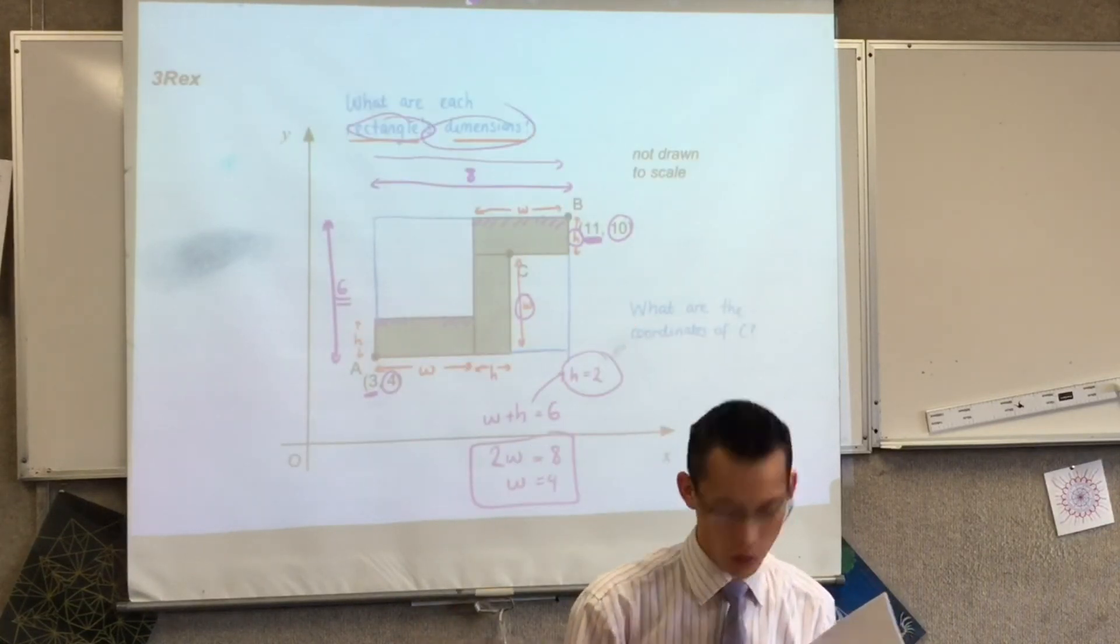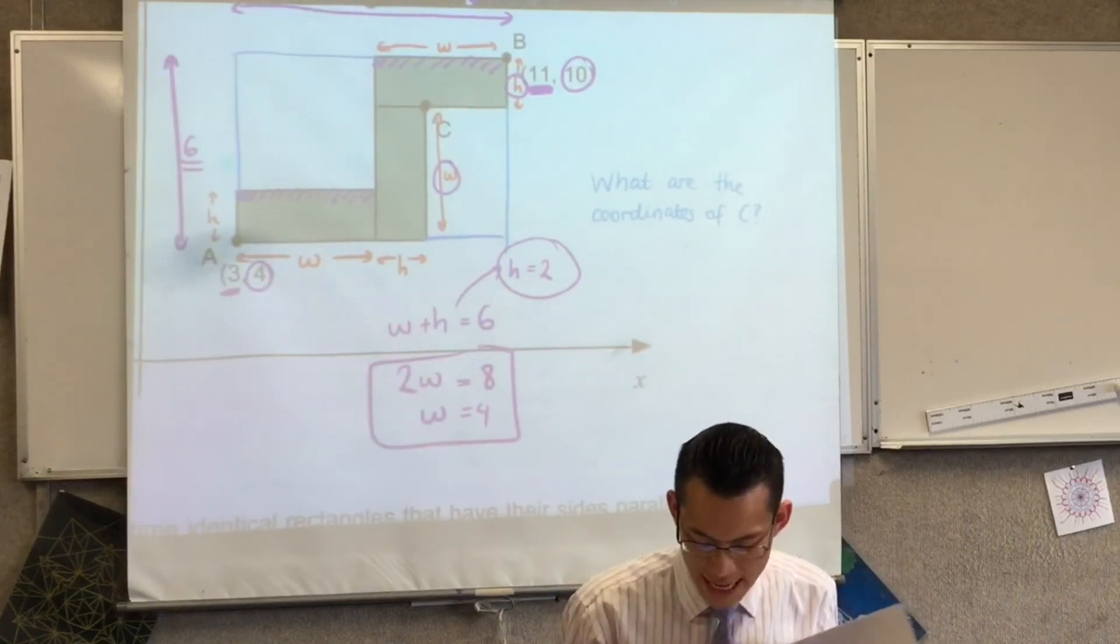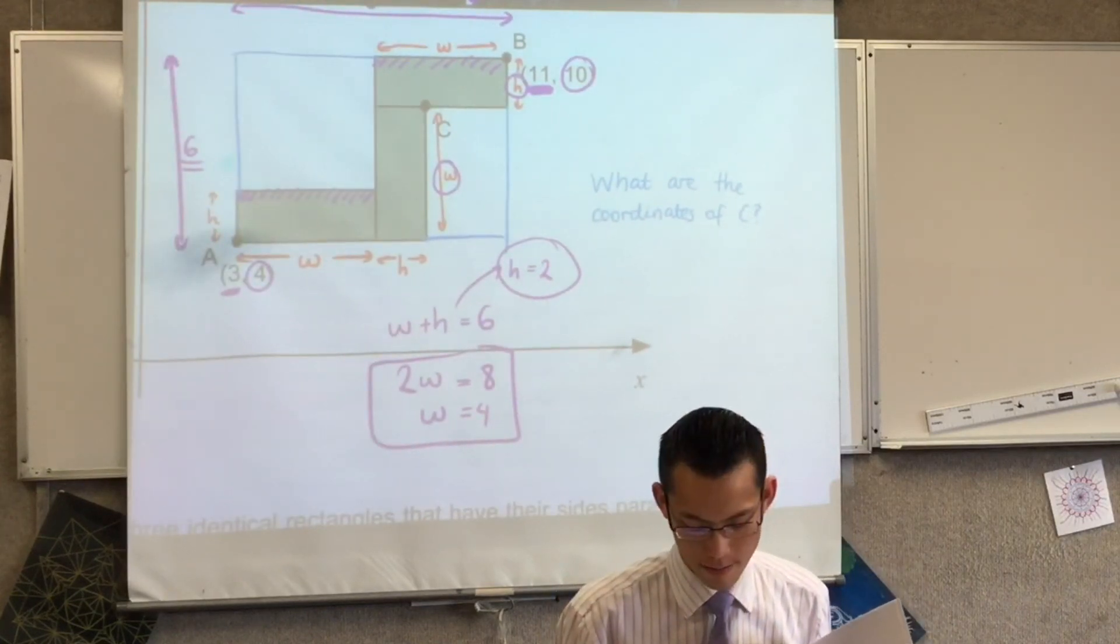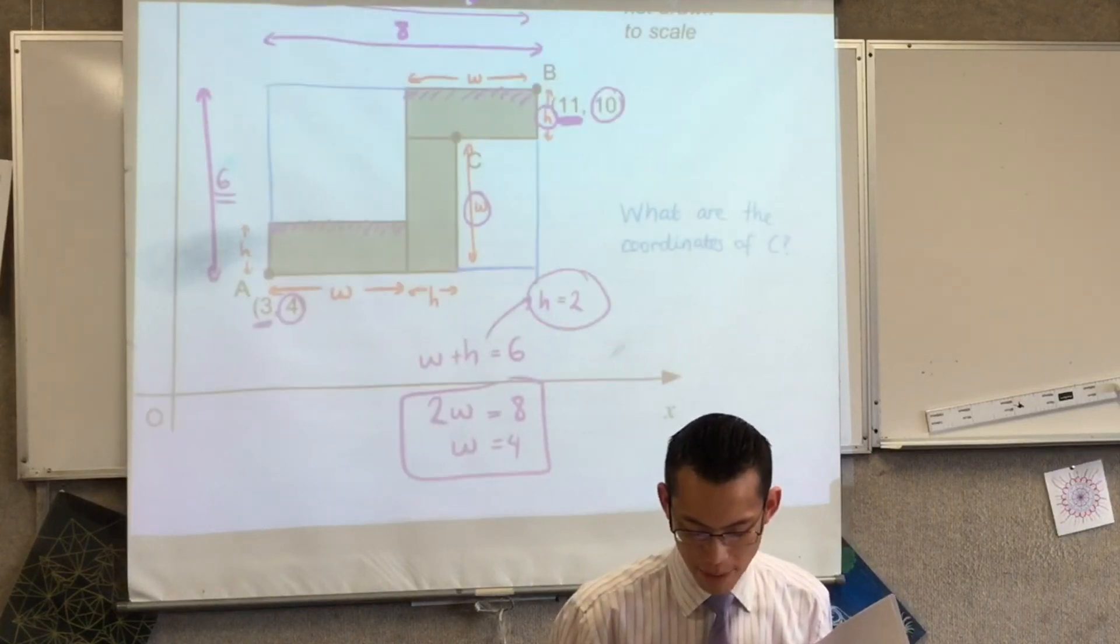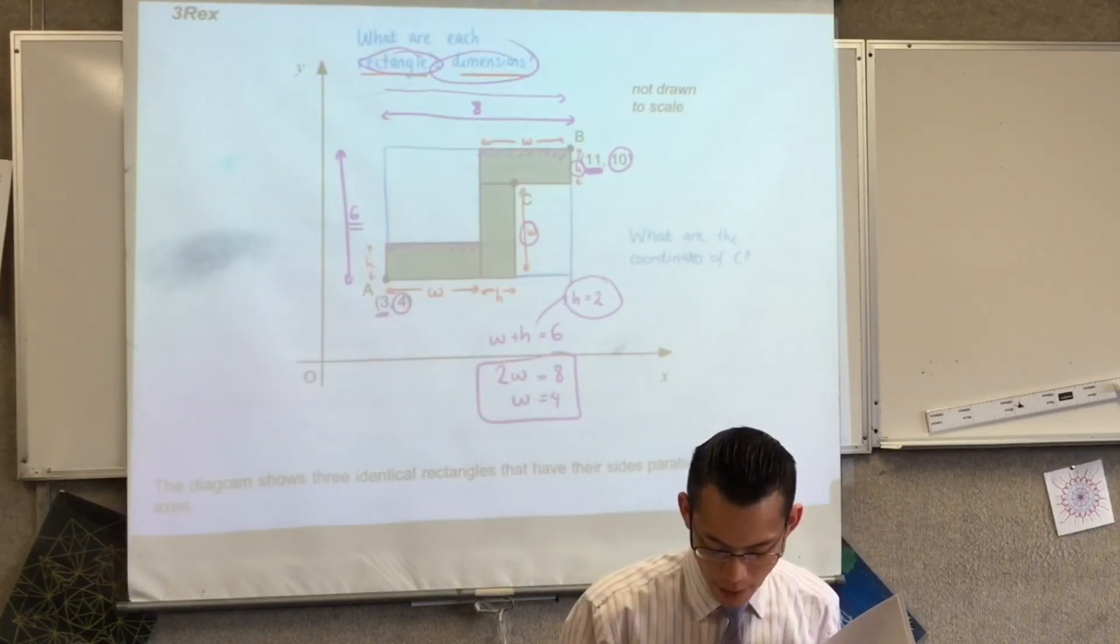Rectangle's dimensions, they're all two by four. Okay, so how do I find out where C is? How do I find out? What do you reckon?